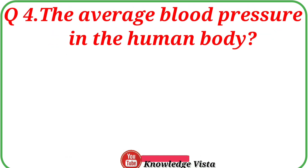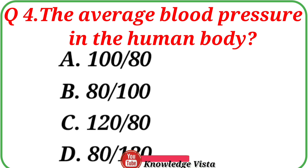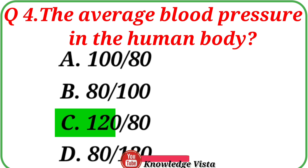Question number 4: What is the average blood pressure in the human body? Option A: 180. Option B: 80-100. Option C: 120/80. Option D: 80-120. The correct answer is option C, 120/80. The systolic pressure is around 120 mmHg and diastolic pressure should be around 80 mmHg.